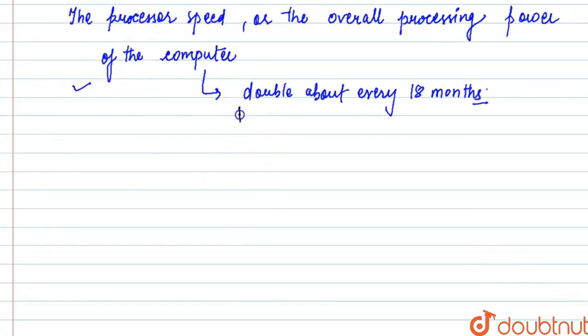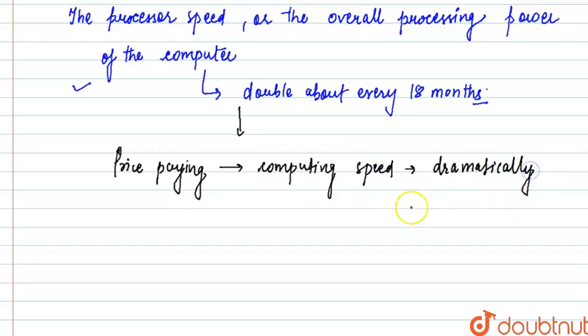And we also see that the price we are paying, the price that we are paying for our computing speed, has also dramatically reduced or you can say dramatically reduced or fluctuated.